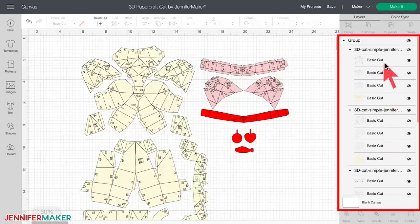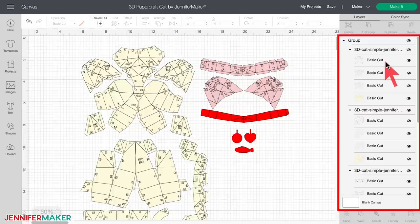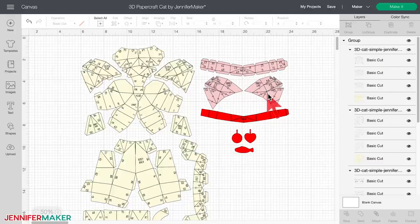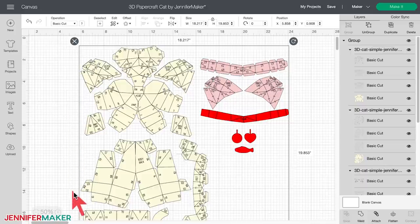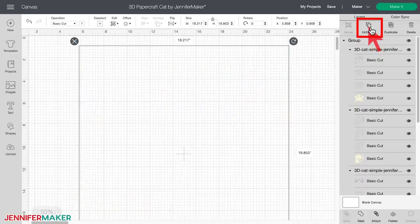But if everything here in this layers panel says basic cuts, then that means that you need to set your score and pen lines and attach them to your base layers before you cut. To set score and pen lines, first select the cat pattern on the canvas by clicking on it with your mouse until you see the frame appear around all four sides of it like this. Then click ungroup in the upper right corner so that you have four individual groups.